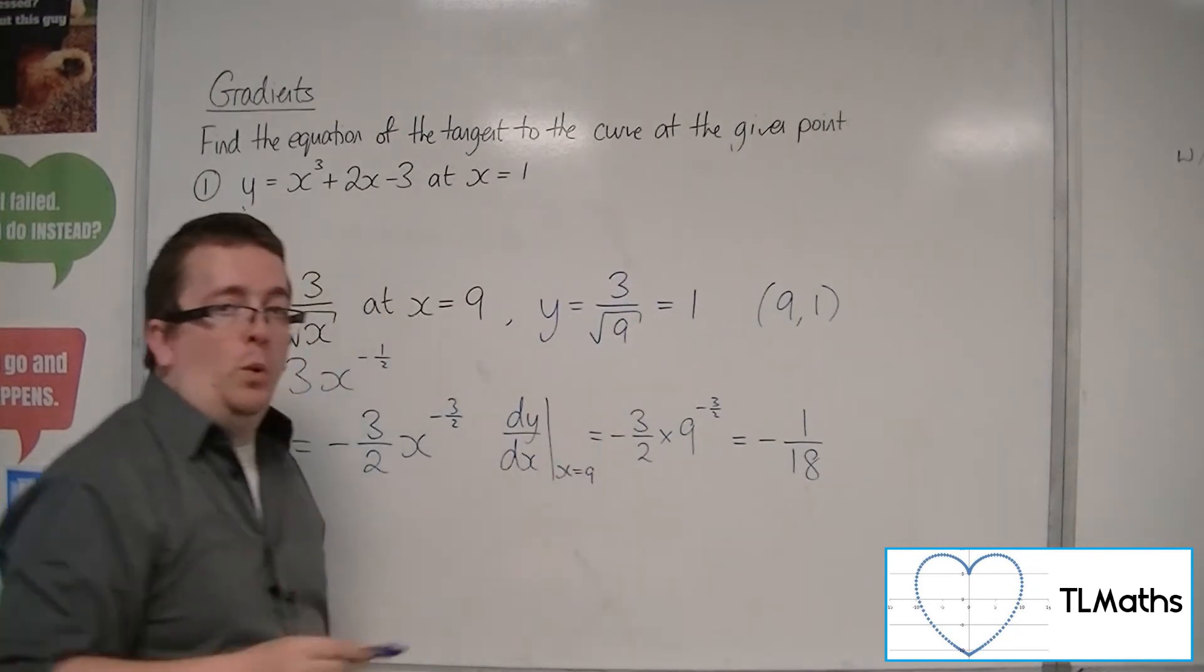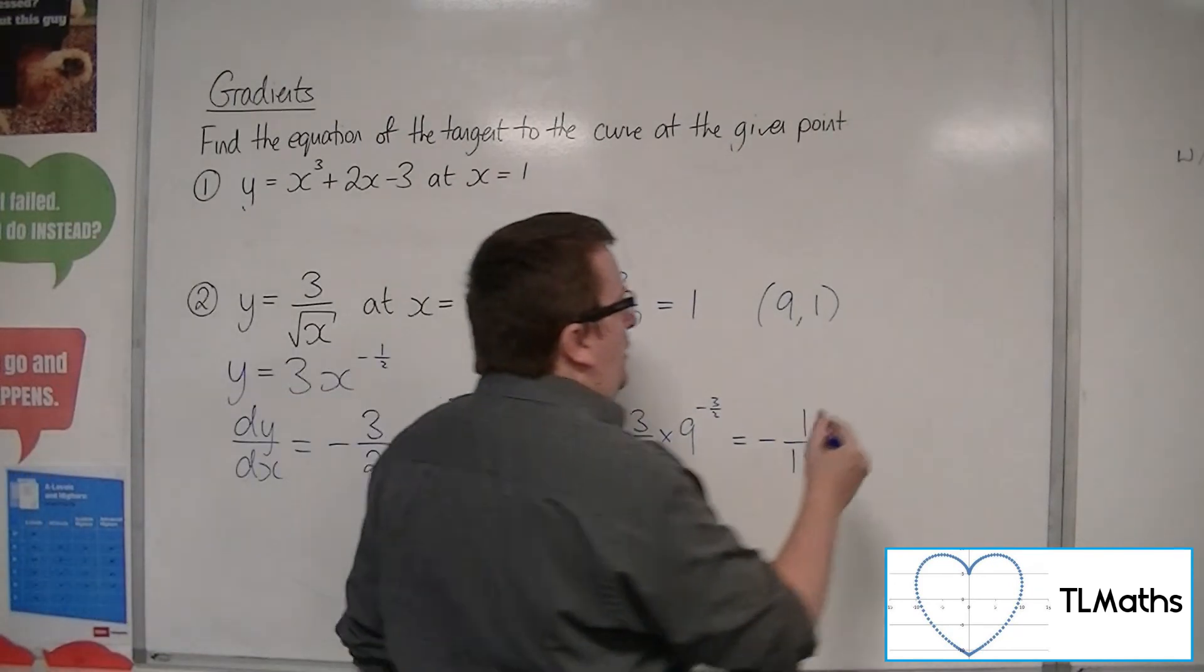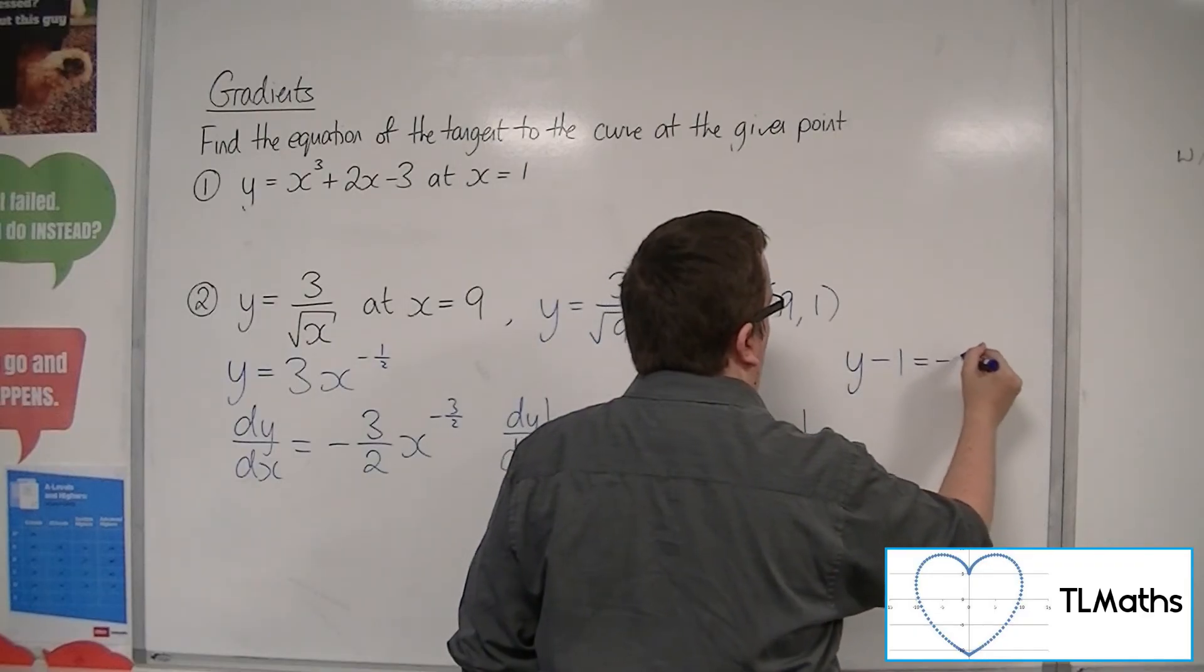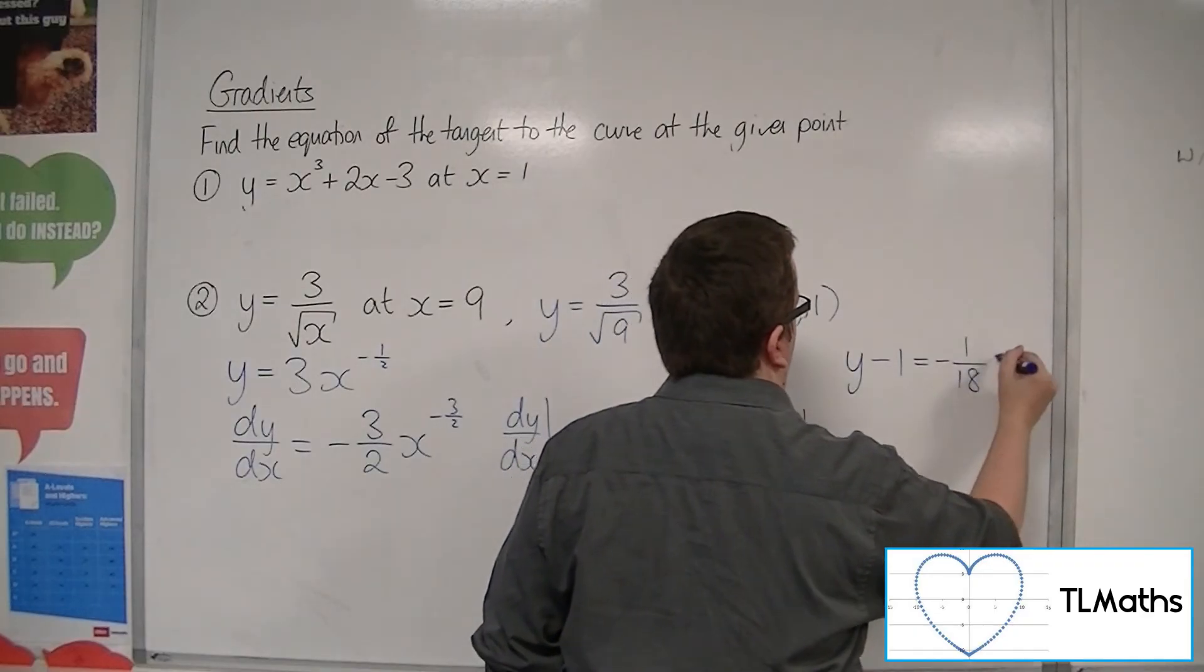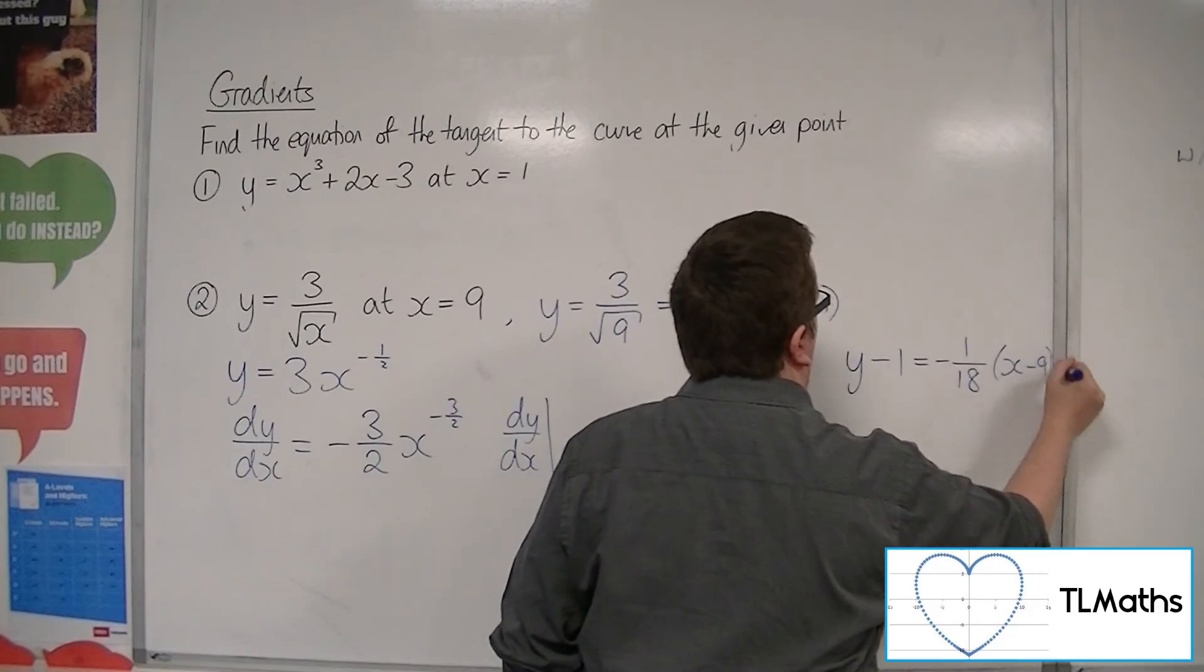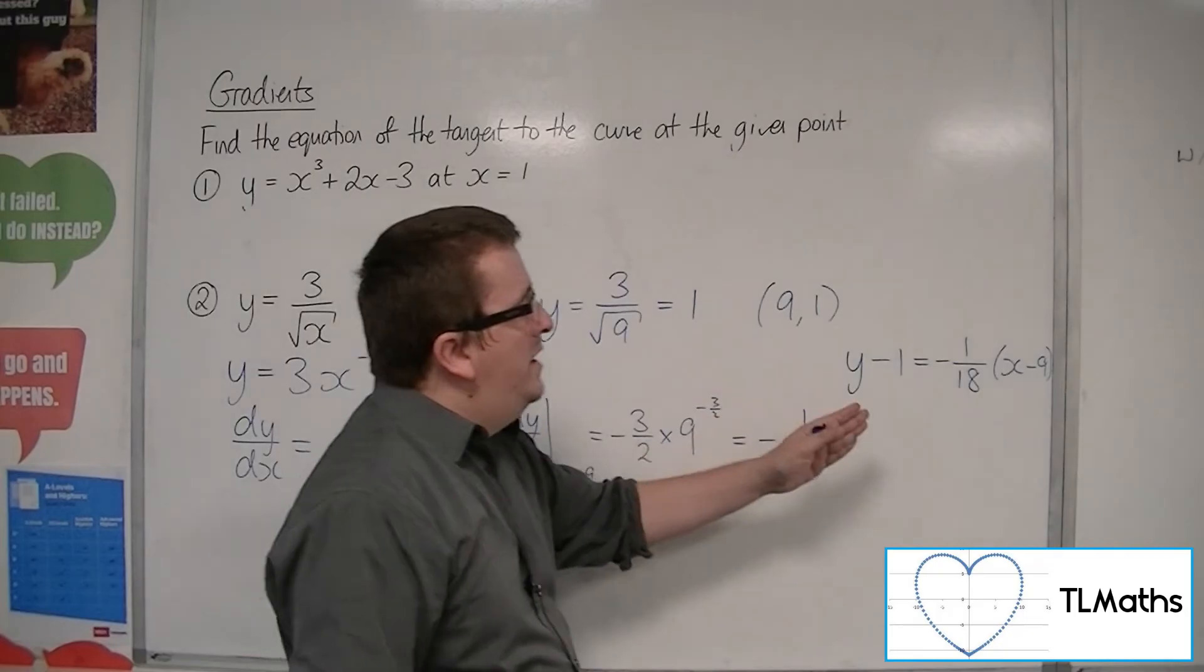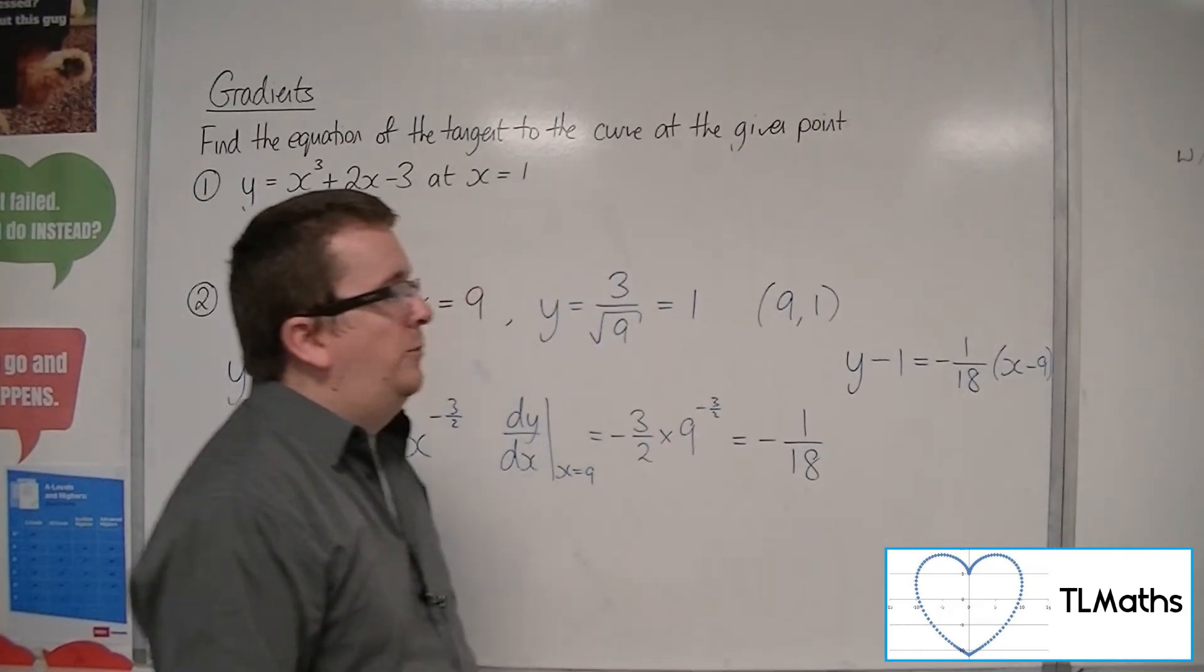Those are the coordinates it goes through. So we can use the y minus y1 is equal to mx minus x1. So y minus 1 is equal to minus 1 18th times x minus 9.